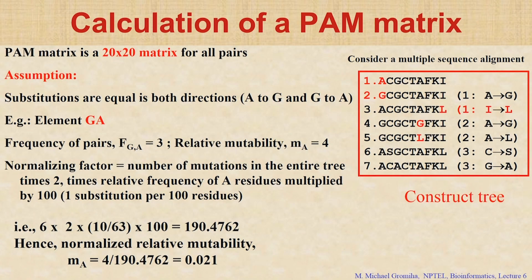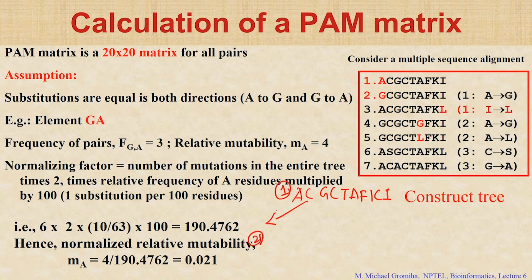We have different sequences — sequence 1, 2, 3, 4, 5, 6, 7. From different sequences you can see the mutation. From 1 to 2, position 1: A is mutated to K. If you take this one: A, C, G, C, T, A, F, K, I. Going to sequence 2, what is the mutation? A is mutated to G. The second sequence is G, C, G, C, T, A, F, K, I. Then the third sequence: the mutation is I to L.